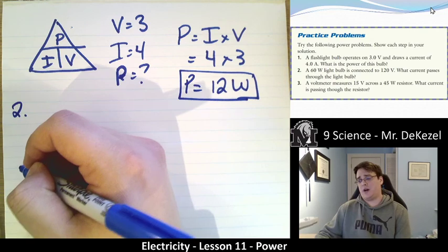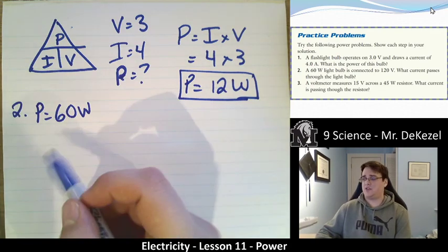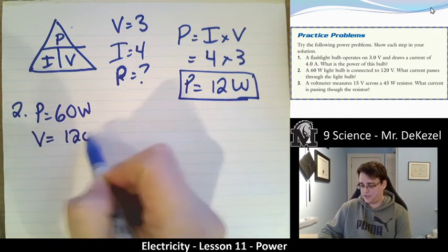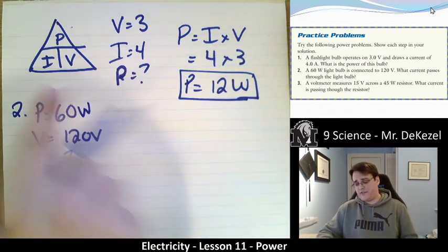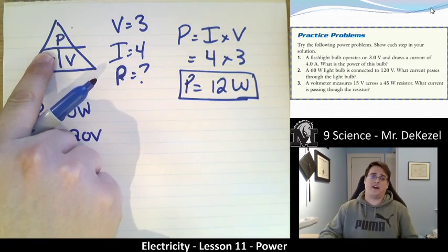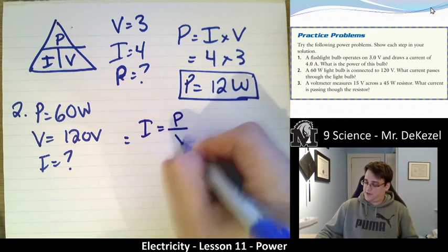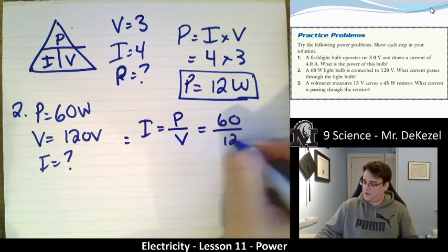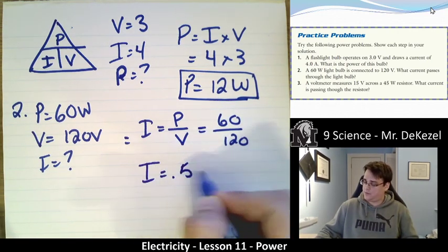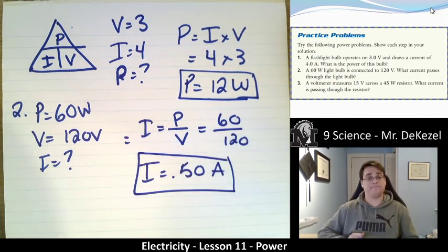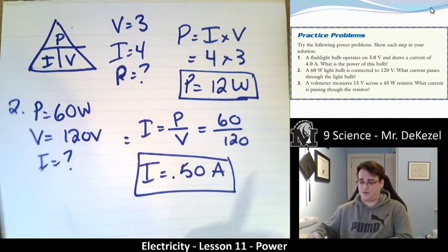Question two. A 60-watt bulb. So that means it's giving us power. 60 watts. It's connected to 120 volts. What is the current? Current is our question mark. So let's cover up current in our triangle. That means we have power divided by voltage. So we have current is equal to power divided by voltage, which is equal to 60 divided by 120. 60 divided by 120 is a half. So the current is equal to 0.5 amps. That is the answer for question two. So using our triangle, it is very straightforward. As long as we know two things, we can find the third.